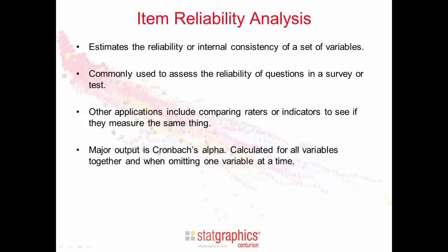The major output is Cronbach's alpha. It's calculated for all variables together and when omitting a single variable at a time.